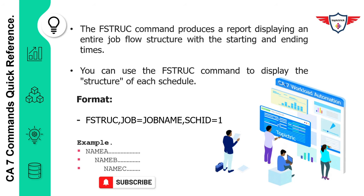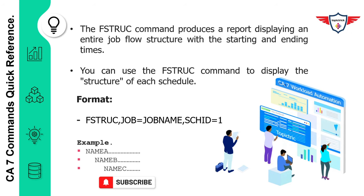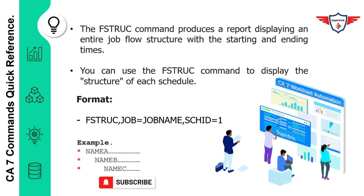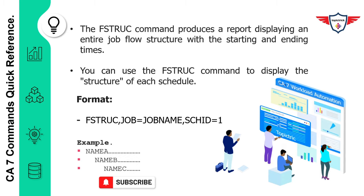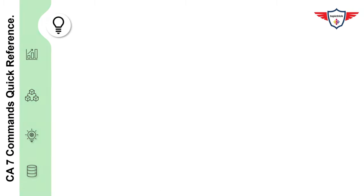Now let's focus on the format of the F-STRUCF command. This command is pretty simple and straightforward. You need to type the keyword F-STRUCF followed by a couple of different parameters as per your requirement. Once you write this command on the CA7 screen and hit Enter, it will generate the detailed job flow structure so you can easily understand what the predecessor and successor are, and at what time a job is going to trigger.